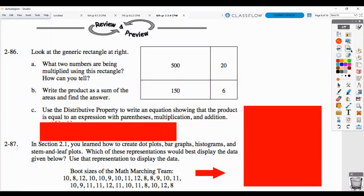This video is to allow you to correct your homework for section 2.3.4. So the first thing they want you to do is look at this generic rectangle. What two numbers are being multiplied using this rectangle and how can you tell?